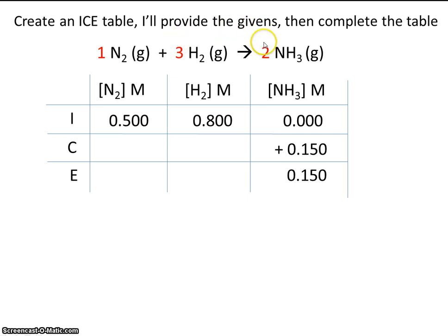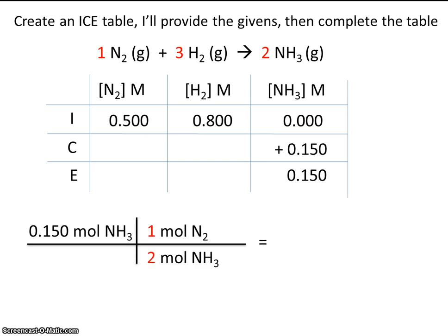So if we increase this by 2, this decreases by 1. So the relationship is 2 to 1. So if we increase the concentration by 0.15, how much will this concentration go down? Well, like I said, the relationship is 2 to 1.